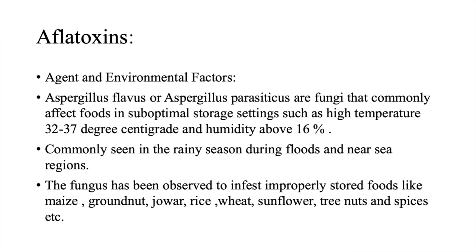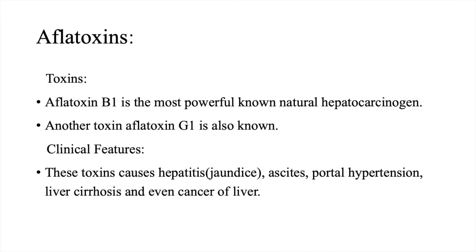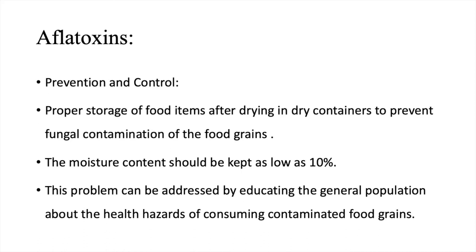Commonly seen in the rainy season during floods and near sea regions, the fungus has been observed to infest improperly stored foods like maize, groundnut, jowar, rice, wheat, sunflower, tree nuts, and spices. Aflatoxin B1 is the most powerful known natural hepatocarcinogen; Aflatoxin G1 is also known. Clinical features: this toxin causes hepatitis, ascites, portal hypertension, liver cirrhosis, and even cancer of the liver. Prevention and control: proper storage of food items after drying in dry containers to prevent fungal contamination. The moisture content should be kept as low as 10 percent. The general population should be educated about the health hazards of consuming contaminated food grains.